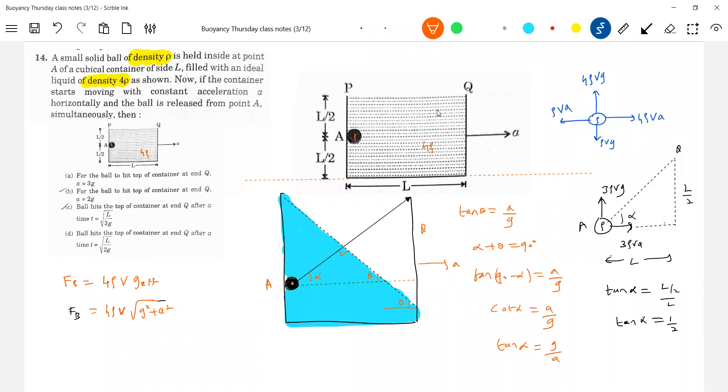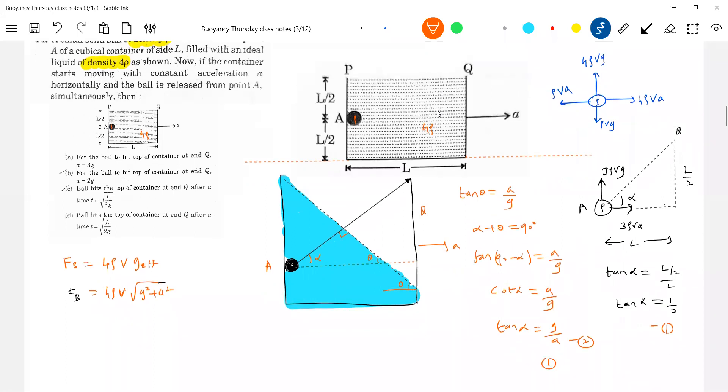Do we have? Shall we equate? 1, 2. So equating, therefore equating 1 and 2. G by, 1 by 2 equal to G by A. A equal to 2G. This will be our answer.